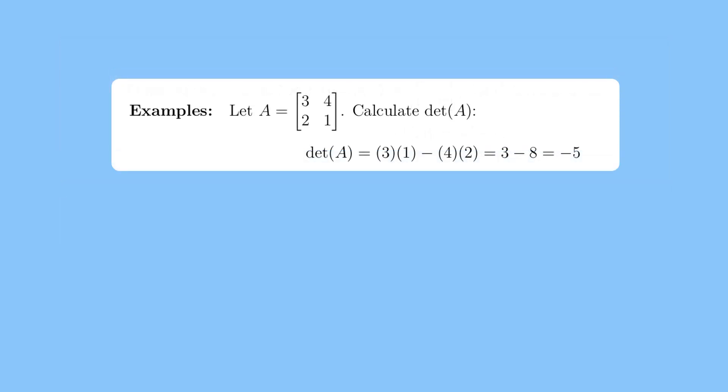For instance, let's examine a matrix with entries 3, 4, 2, and 1. The determinant of this matrix is computed as 3×1 - 4×2, which equals -5. The negative sign reflects a change in orientation, while the magnitude of 5 shows that the area is scaled by a factor of 5.